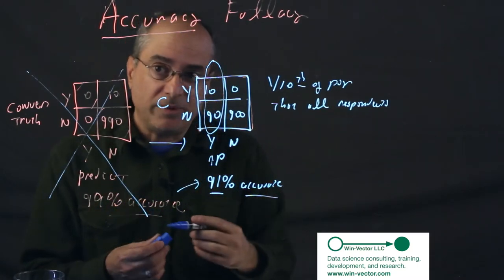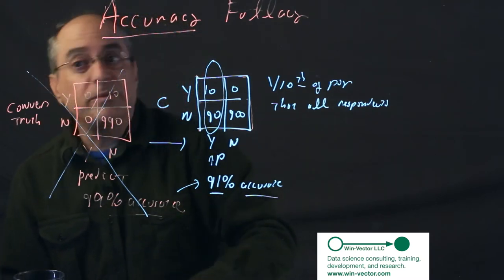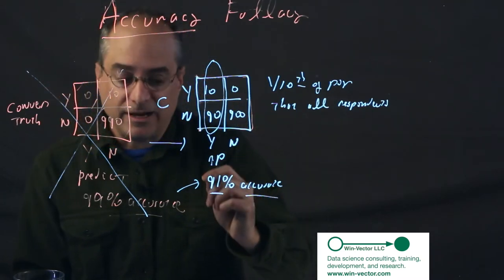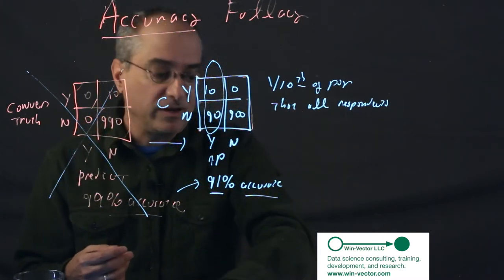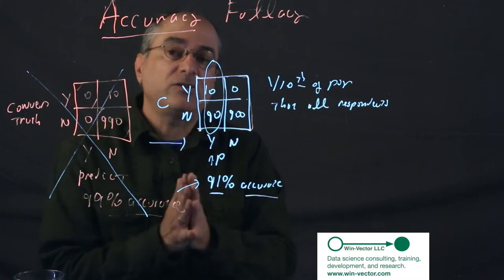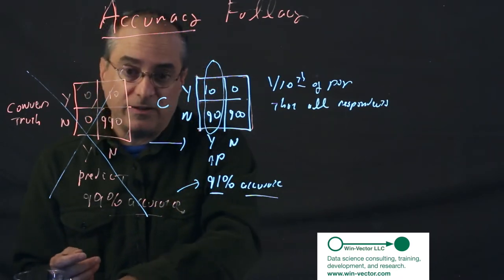Now, you can use an artificial metric called balanced accuracy, but that's actually quite dangerous because nobody will ever remember you said balanced accuracy. They'll re-quote it as accuracy and you end up with a morass. Now, what are the metrics you should be using in this situation?